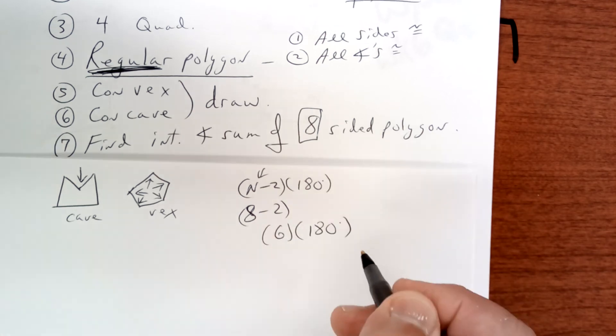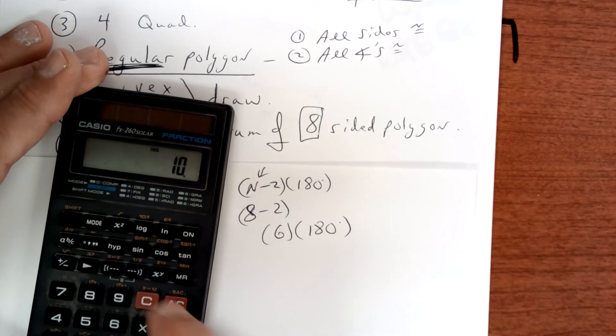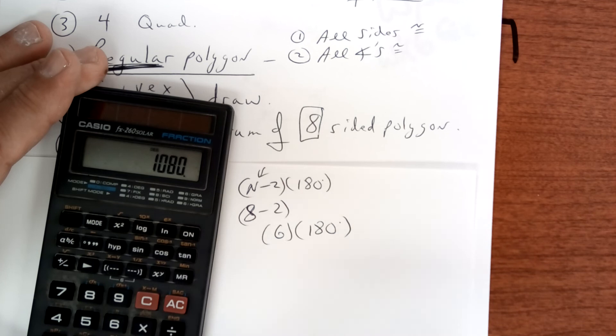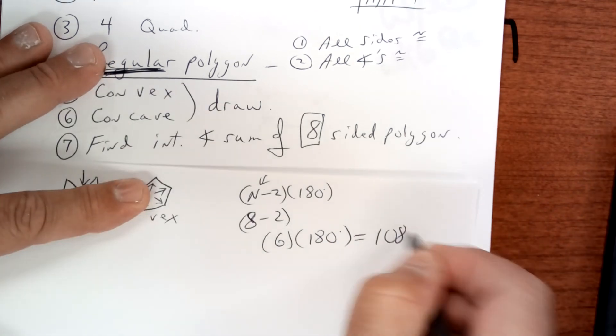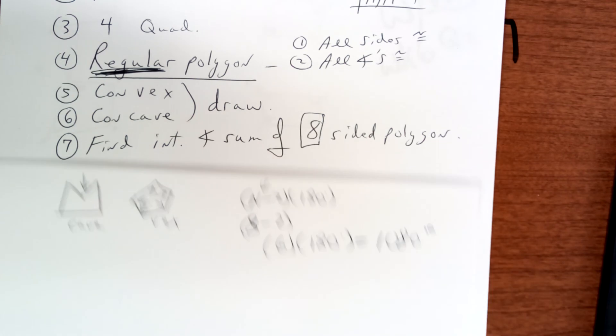I don't know how much that is, but we're going to find out. So six times 180 is going to be 1080. So it's 1080 degrees, the interior angle measure. All right, put away your bell work.